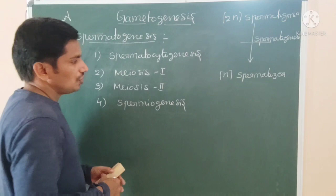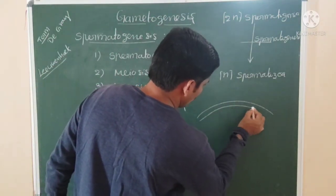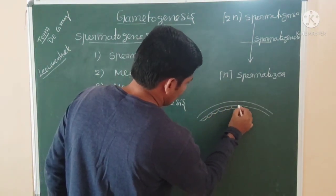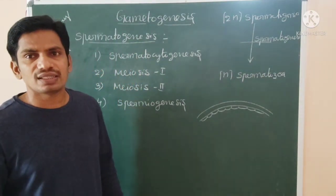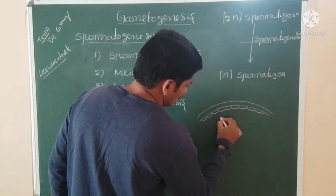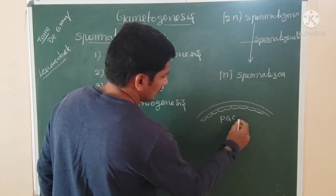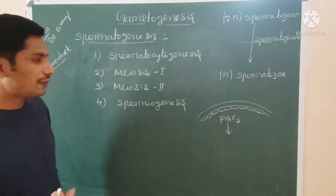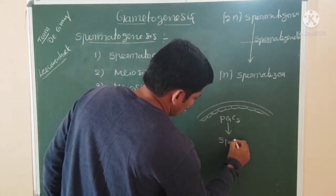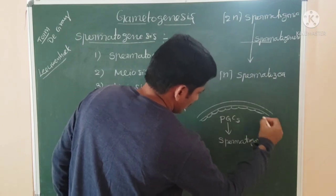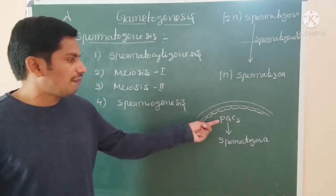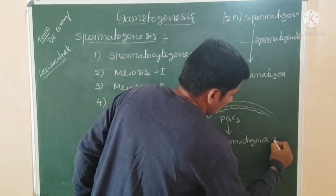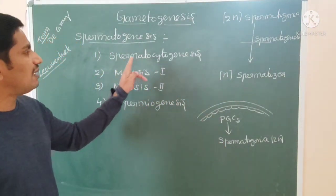In spermatogenesis, the seminiferous tubule is present in the testis. The seminiferous tubule is lined by the germinal epithelium. These germinal epithelial cells undergo mitosis and produce the diploid spermatogonia. PGCs undergo a number of mitotic divisions and form spermatogonia, which are also in the diploid condition.